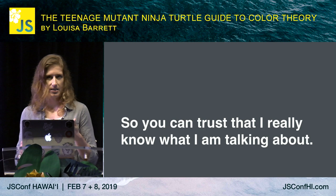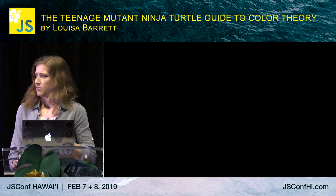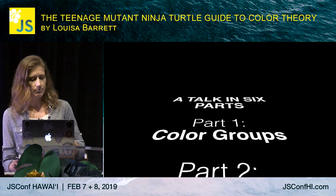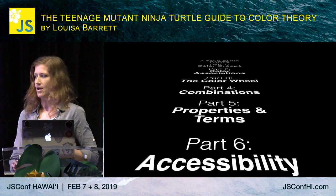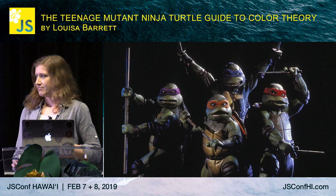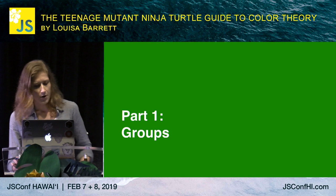Even though I was missing the four primary qualifications — being a turtle, a teenager, a mutant, and a ninja — that's fine. For this talk, we've got six sections: color groups, color associations, the color wheel, color combinations, properties and terms, and accessibility — because it's important and you should worry about it. Let's get started.